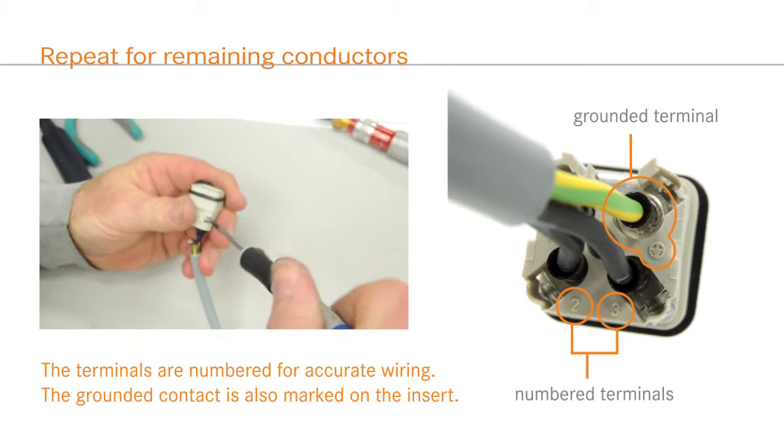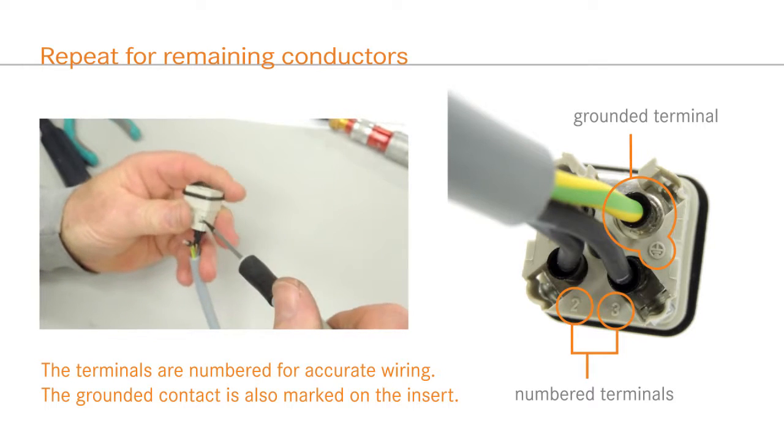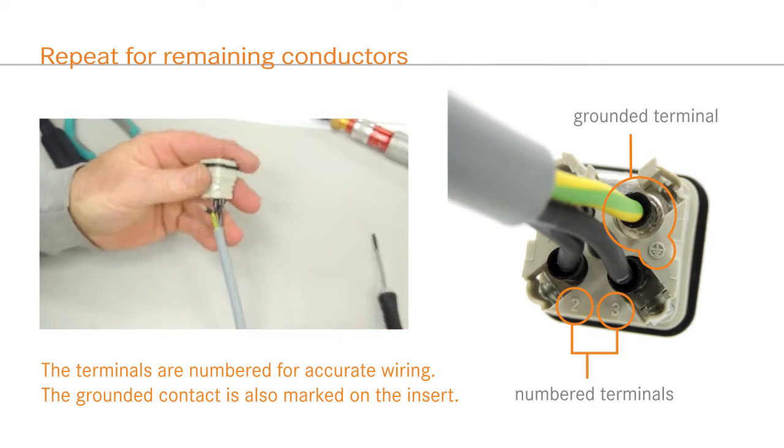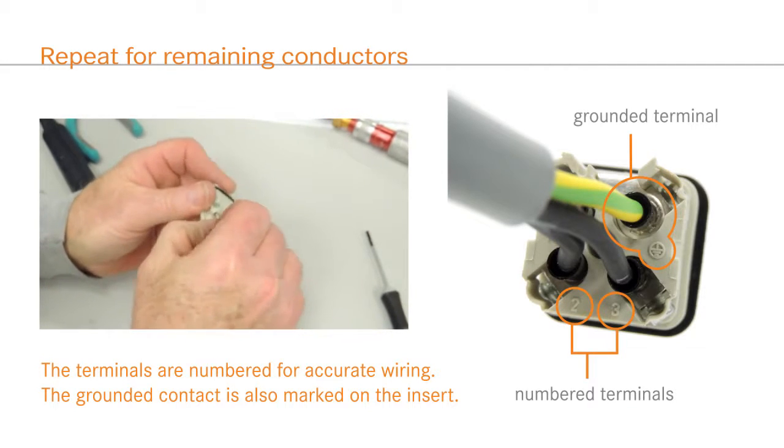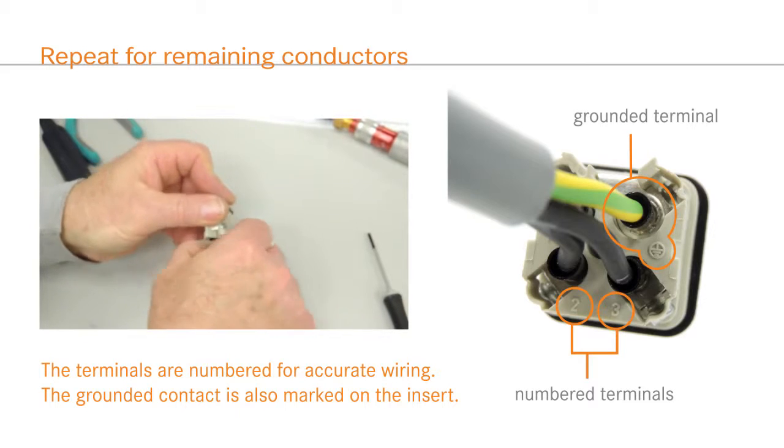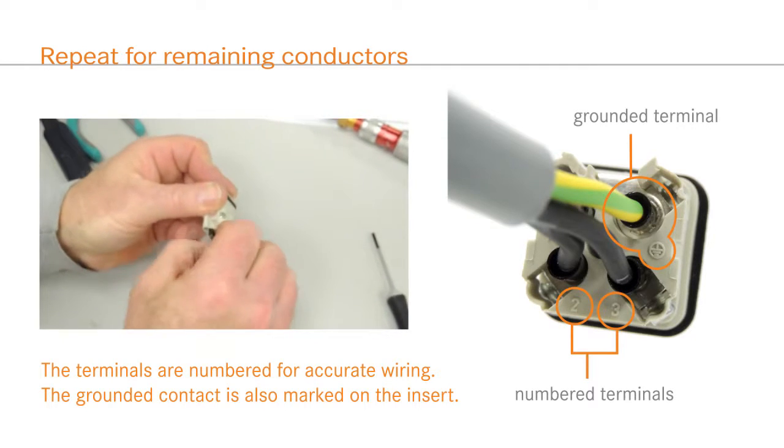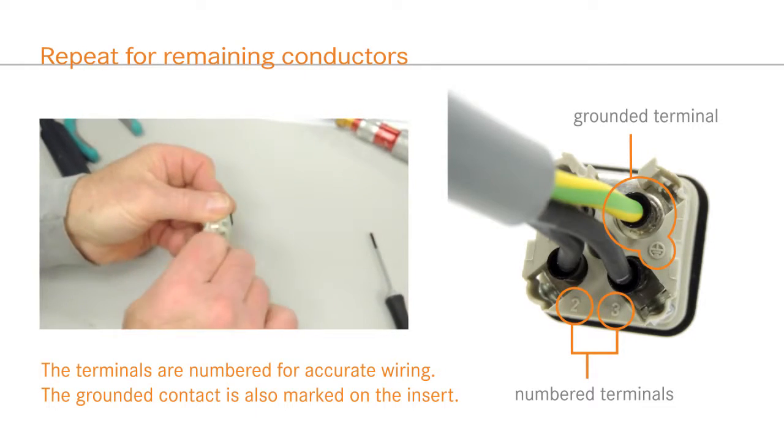All EPIC rectangular inserts are numbered for accurate and consistent wiring. The ground terminal is also marked. Insert the conductors accordingly. This is important to maintain a connection between the numbered contacts of the plug and the correspondingly numbered contacts of the receptacle.